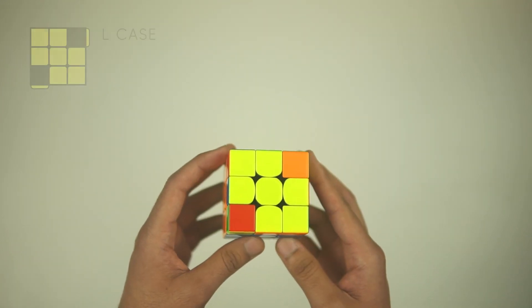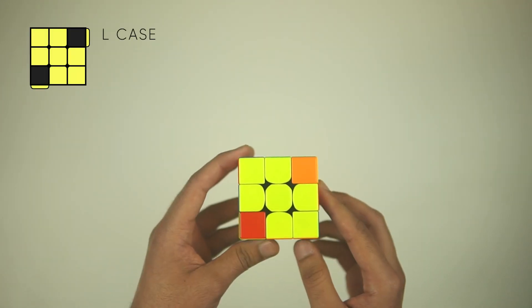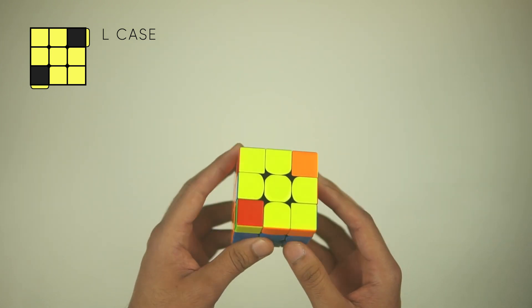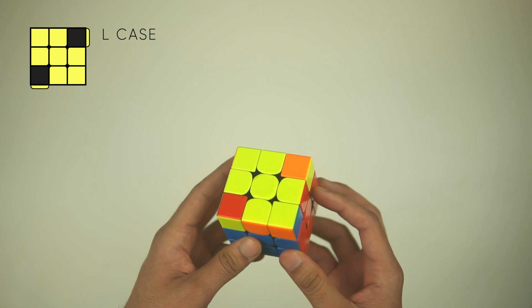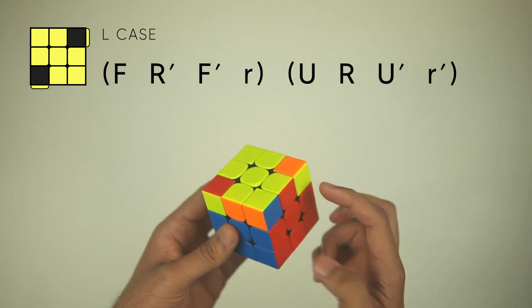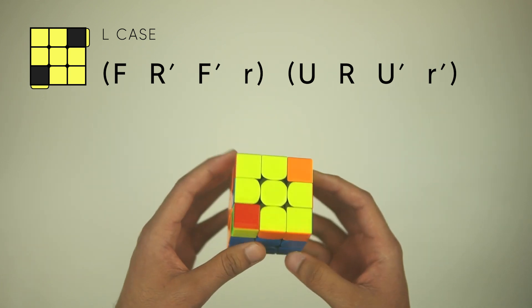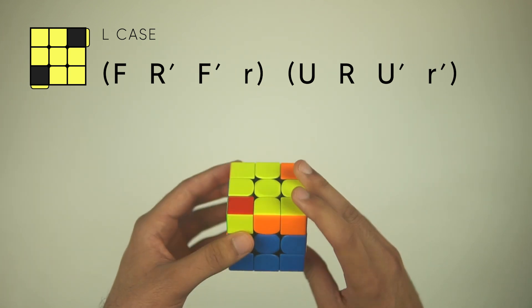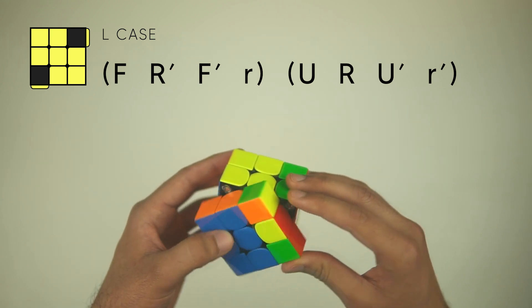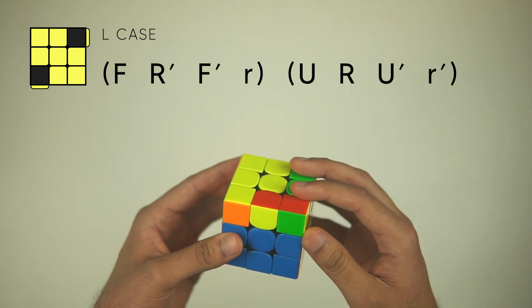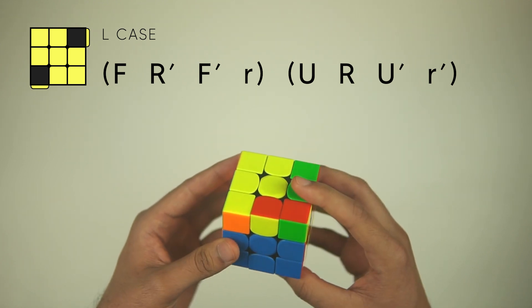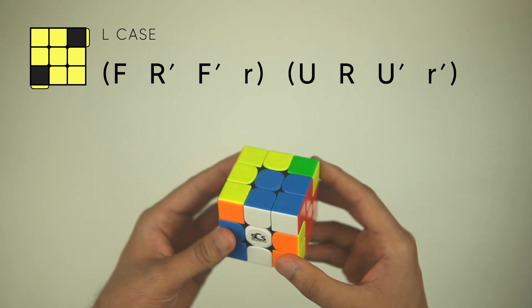Next, it gets a bit more interesting with the L case, and you recognize it by seeing these two yellow corners that are solved diagonally, opposite from each other. And you're going to hold this yellow corner in the front left like that, and notice this one's over here. To solve this, we do an F, R', F'. Now, you're going to do a lowercase R, so not just a regular R, but a lowercase where you move the middle layer with it, like that, to bring all of this up.